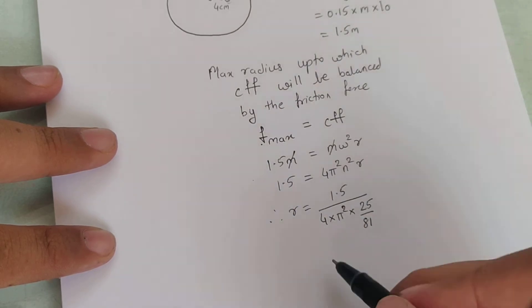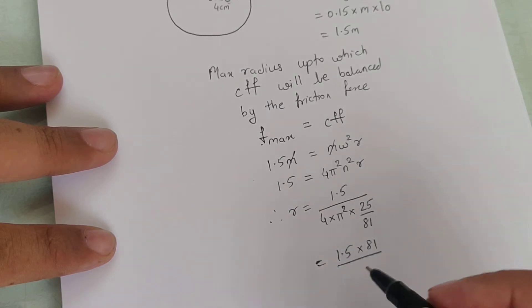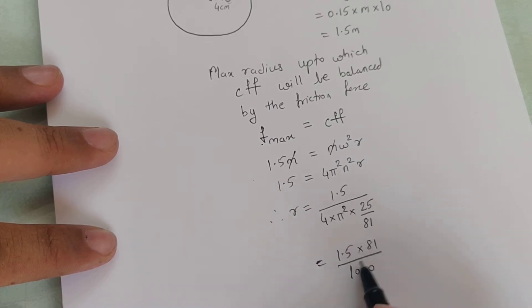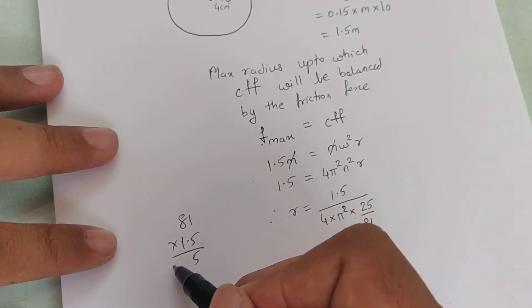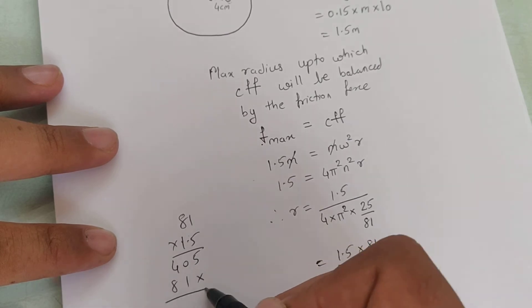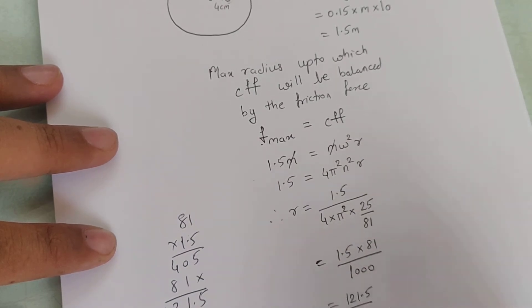Now I took 81 on the upper side, I will get 1.5 into 81 upon pi square. If we take it as 10 and 25 into 4 is 100, that makes this as 1000. So if we multiply 81 into 1.5, we get the value as 121.5 by 1000, which gives me 0.1215 meter, which is also 12.15 centimeter.